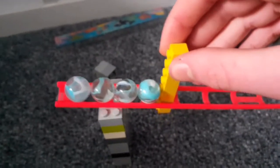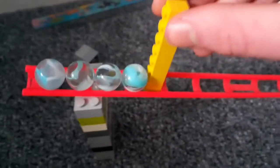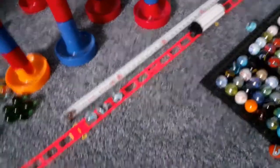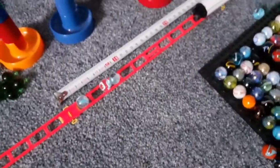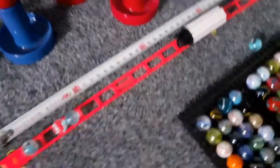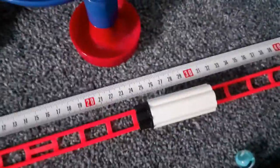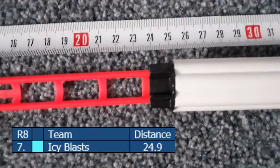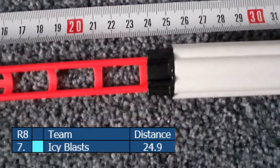Now, the Icy Blasts, one of the new teams, came fifth in the pre-qualifiers in this event. Oh, they lost a marble. That will not do anything for their run, but they don't get a rerun for that. They get a rerun if they knock the block out. That's going to really hurt them there. That's not at all what they wanted. They're going to get something around 24. And yes, it's 24.9, which is the second lowest of the day.